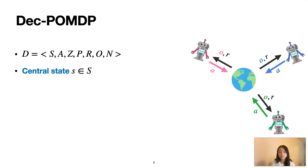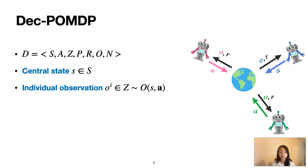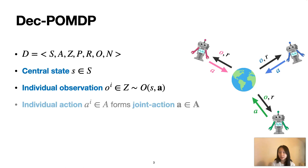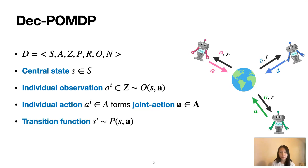S describes the central state of the environment. At each time step, each agent draws individual observations O from the observation function. Each agent then chooses an action A, forming a joint action. This causes a transition in the environment according to the state transition function. All agents share the same reward function.